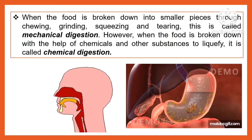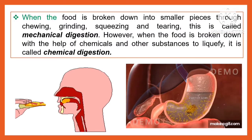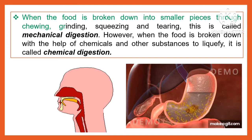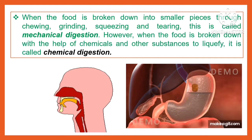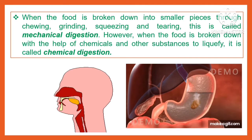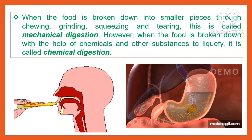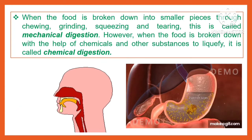When the food is broken down into smaller pieces through chewing, grinding, squeezing, and tearing, this is called mechanical digestion. However, when the food is broken down with the help of chemicals and other substances to liquefy it, it is called chemical digestion.